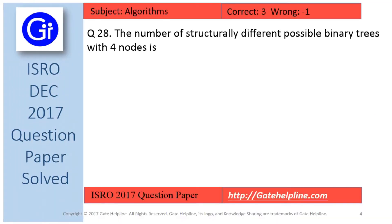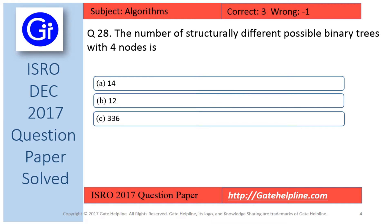So friends, question number 28 is: the number of structurally different possible binary trees with four nodes is, and the options are a) 14, b) 12, c) 336 and d) 168.